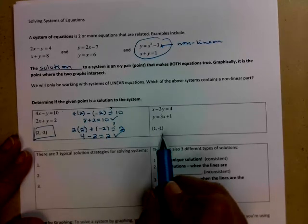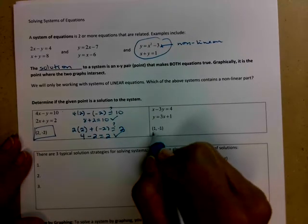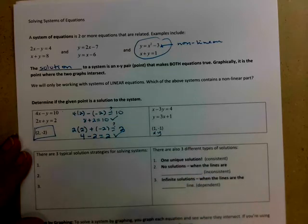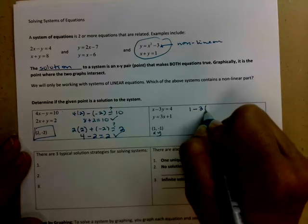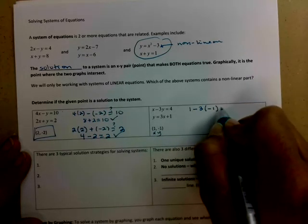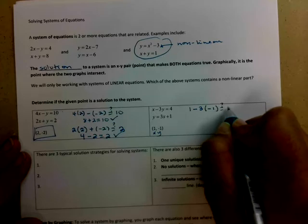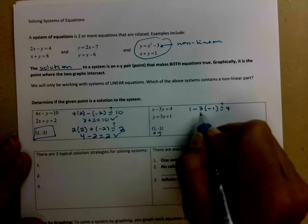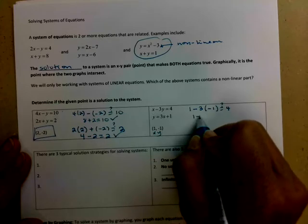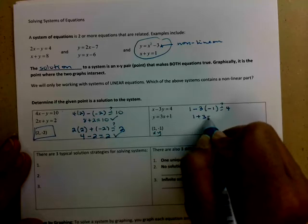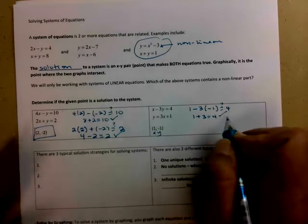Okay, so let's check the next one. So x is 1, y is negative 1, so we're going to plug those in, see if it makes both equations true. So let's see, 1 minus 3 times y, which is negative 1, is that equal to 4? So negative 3 times negative 1 makes that plus 3, so 1 plus 3 does equal 4, that's good, so it works in the top one.